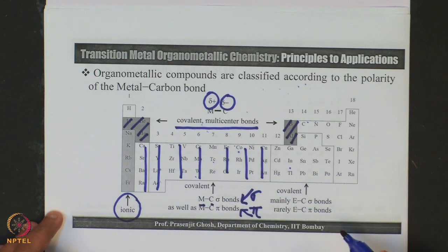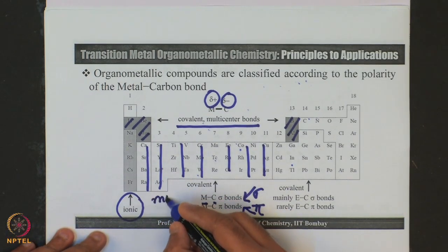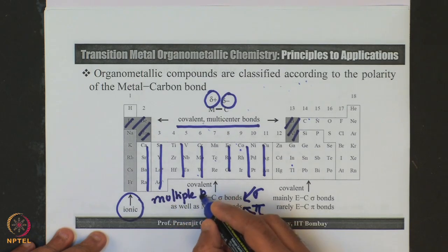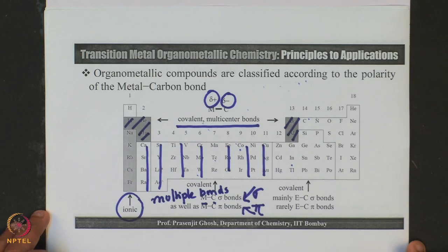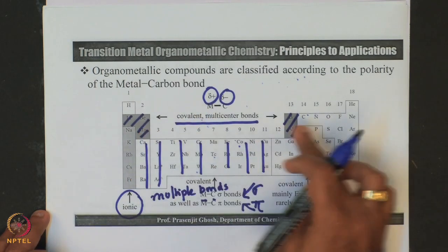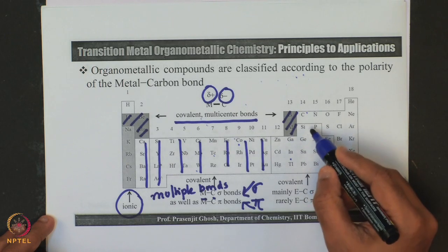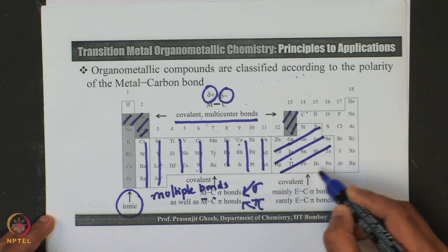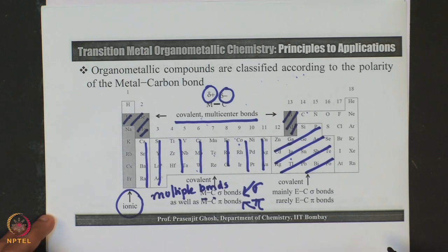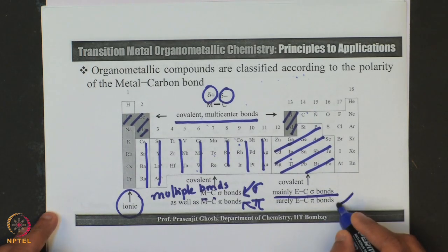Many of these transition metal compounds not only make covalent overlap but are able to form multiple bonds — that is a specialty of these complexes. These bonds, unlike the multi-centered ones, are classical two-centered, two-electron bonds: two nuclei share two bonded electrons. In the region from silicon, phosphorus, zinc, selenium, cadmium, all the way to lead, they also make covalent bonds, but these covalent bonds are mainly sigma type and very rarely pi type.